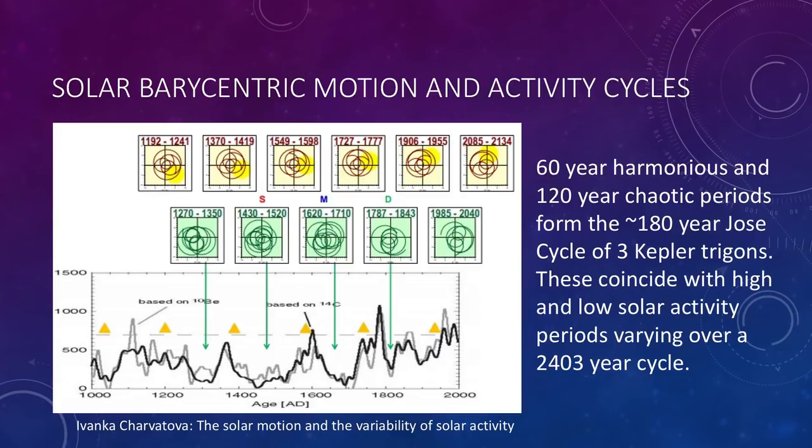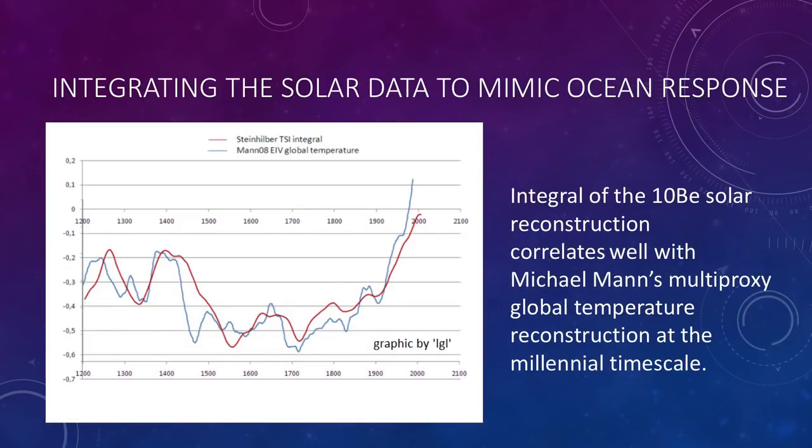And then for the next 120 years it gets more chaotic and then it goes back to being quite regular, what she called harmonious motion. And you can see how these harmonious periods line up roughly with these orange triangles which are near maxima in solar activity as indicated by the 10-Beryllium isotope proxy. And where you have the chaotic periods, this is where you get the cold grand solar minima sequentially. So there's the Maunder Minimum that's been mentioned, the Dalton, the cool part around 1900, and we're just descending into another one now.